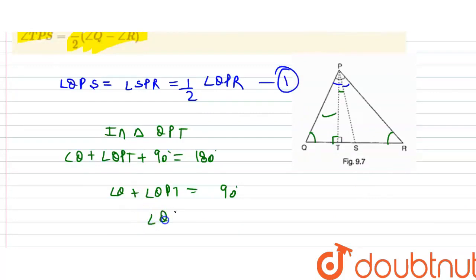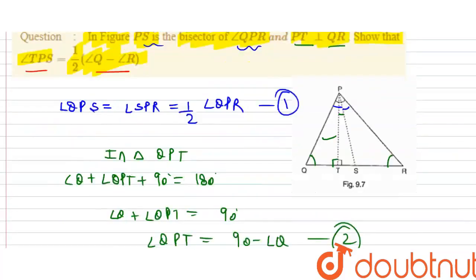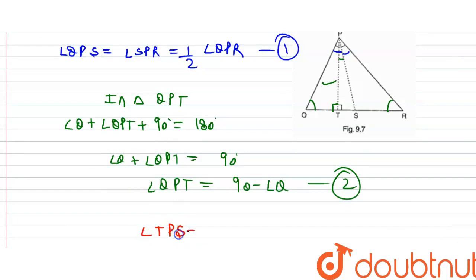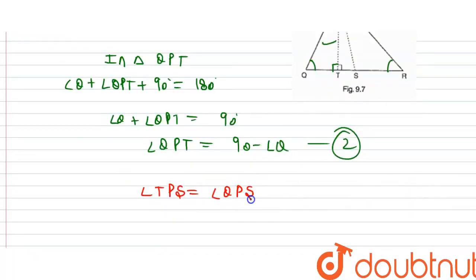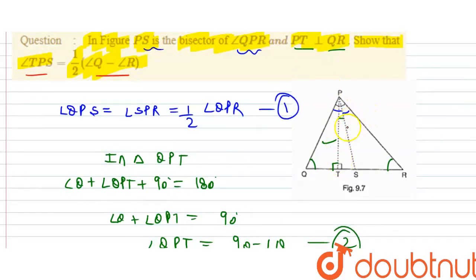So, I can write angle TPS directly as angle QPS minus angle QPT. QPS is the blue angle, and QPT is the red angle. If I subtract the red angle from the blue angle, I get TPS.